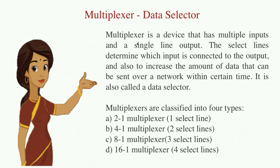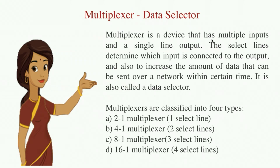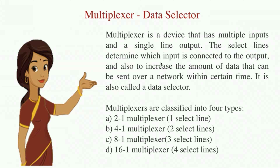A multiplexer is also called a data selector. It is a device that has multiple inputs and provides a single line output. The select lines always determine which input is connected to the output.